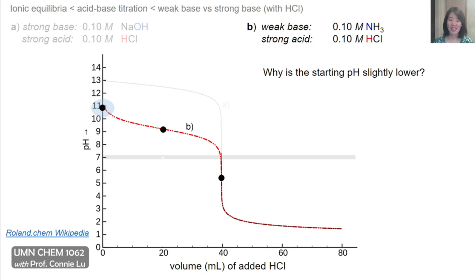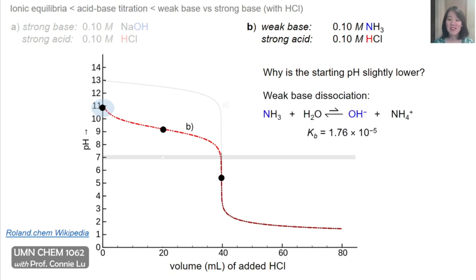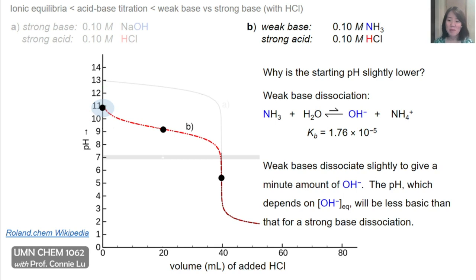Let's address the starting pH and why it's slightly lower. Remember, ammonia being a weak base can dissociate water to form hydroxide and its conjugate acid, ammonium ion. The equilibrium Kb is quite small, so we do not favor these products, but we do form a minute amount of hydroxide that contributes to a pH of about 11. Weak bases only dissociate partially, and that amount of hydroxide that does dissociate is responsible for the pH.